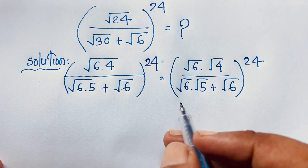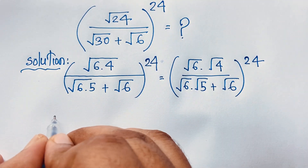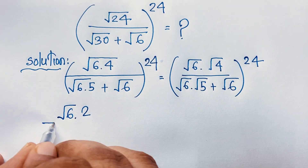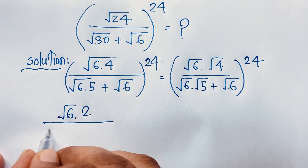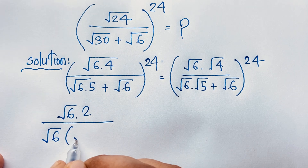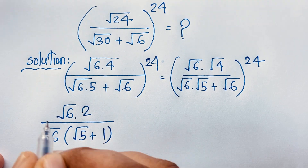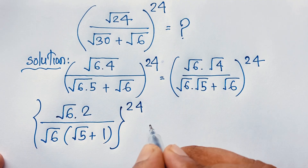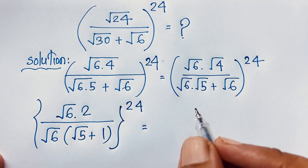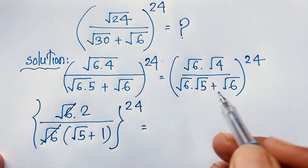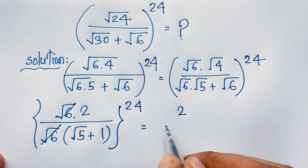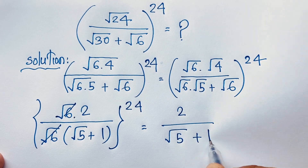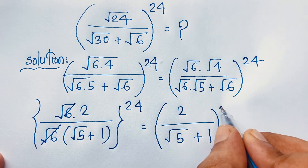Now in this expression, √6 is common in the denominator, so it factors out as √6(√5 + 1). The √6 cancels out, giving us (2 / (√5 + 1))^24.